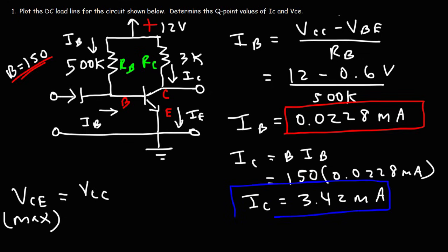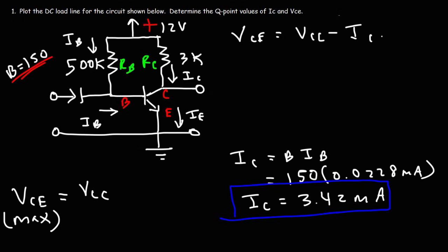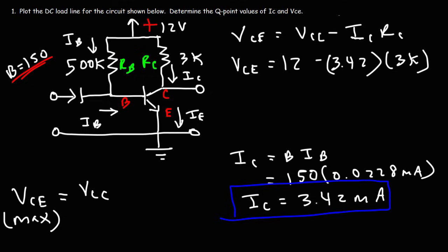Now that we have the collector current, we can calculate VCE. VCE is going to be the collector supply voltage minus the voltage drop across RC, which is IC times RC. It's 12 volts minus 3.42 milliamps times 3 kΩ. Milliamps times kilohms gives volts, so 12 minus 3.42 times 3 gives us a VCE value of 1.74V.